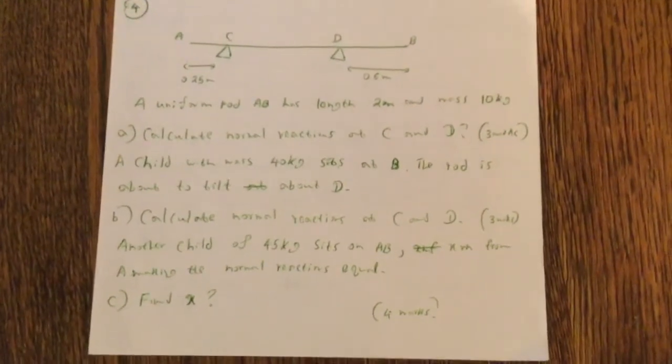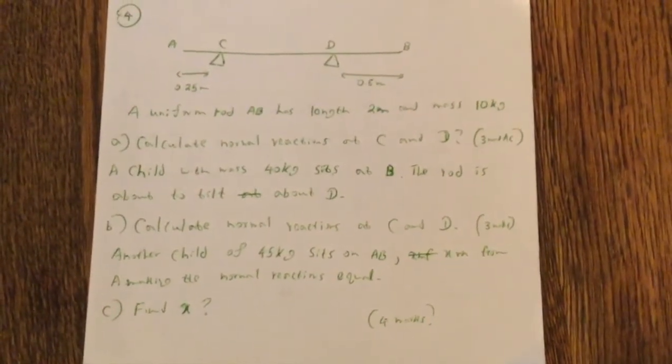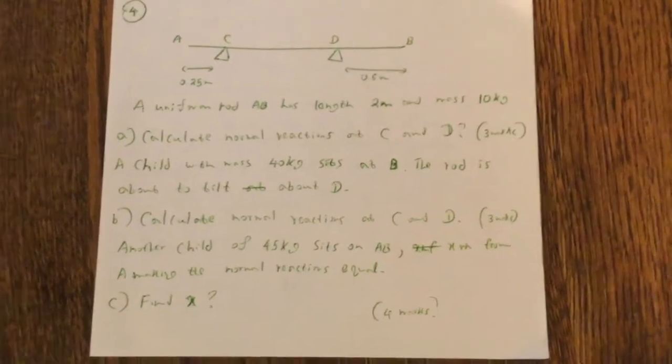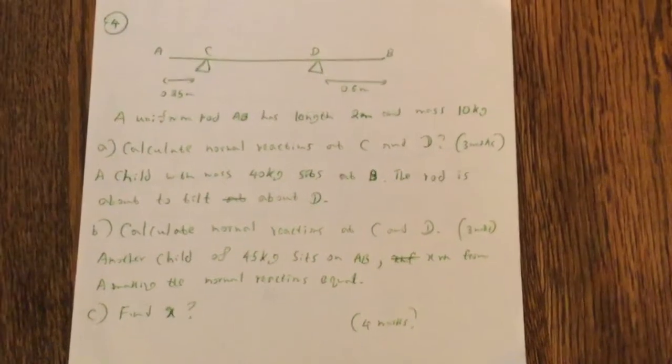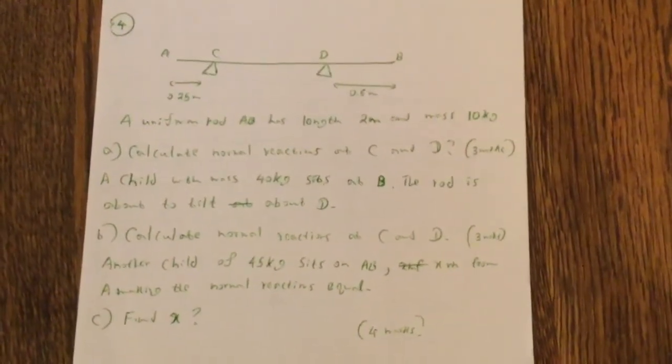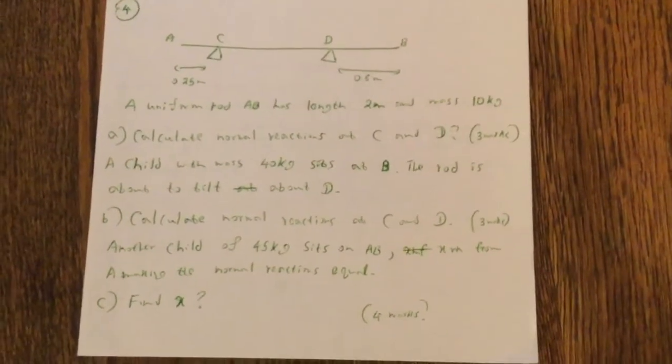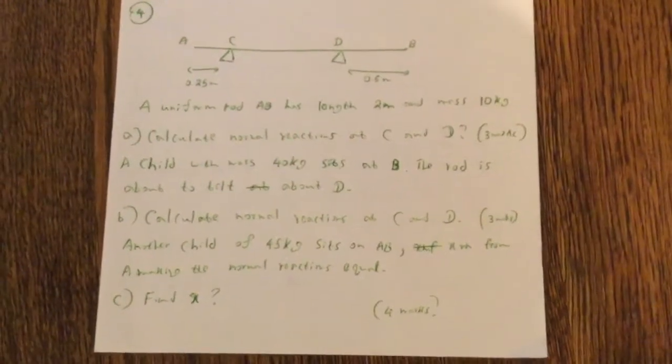Question B, calculate normal reactions at C and D. Another child of 45 kg sits on AB, x meters from A, making the normal reactions equal. Find x. Okay, so that's question 4.